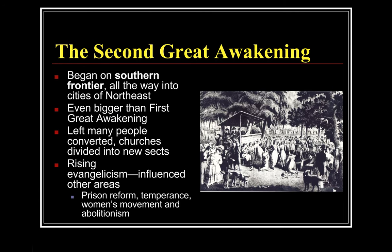The Second Great Awakening began on the southern frontier and spread all the way into the cities of the Northeast. It was even bigger than the First Great Awakening, leaving many people converted and causing churches to divide into new sects. Rising evangelism influenced other areas of society like prison reform, temperance, the women's movement, and abolitionism — all of these reform movements were offshoots of the Second Great Awakening.